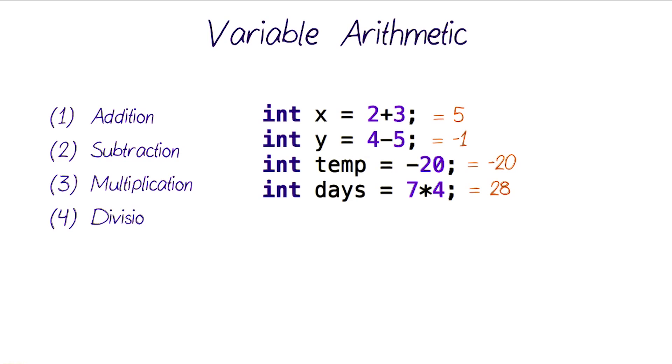And to divide numbers, we use this forward slash sign, like this, double div equals 5 divided by 2, which would result into 2.5.